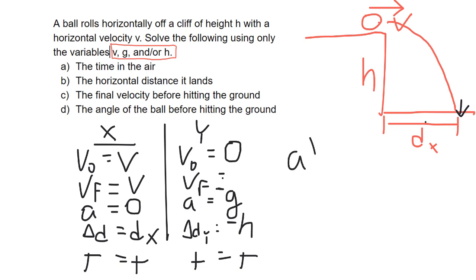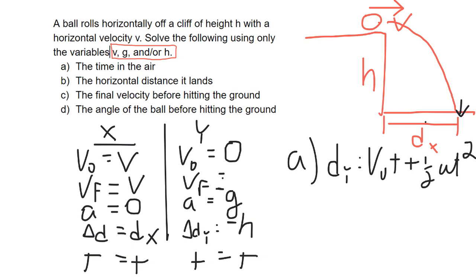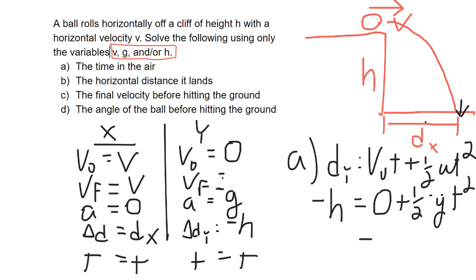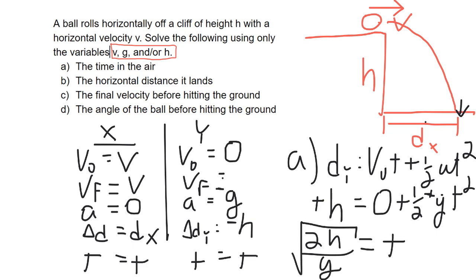Let's solve for part A — the time in the air. We've solved this problem many times. Based on the Y direction variables, our equation is D_Y = V₀T + ½AT². Plugging in Y variables: D_Y is negative H, V initial is zero, and A is negative G, so we get negative H = ½ times negative G times T squared. The negatives cancel, giving positive H = ½GT². Multiplying both sides by two, dividing by G, then square rooting gives us T = sqrt(2H/G).